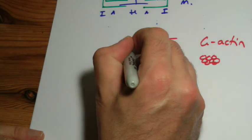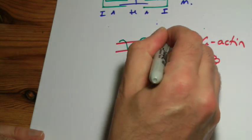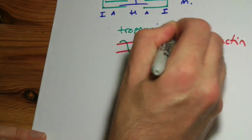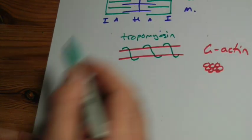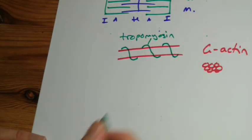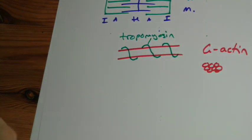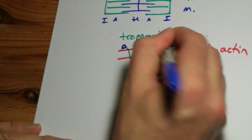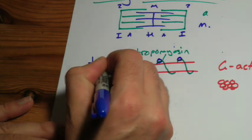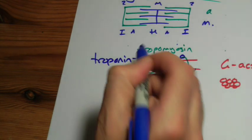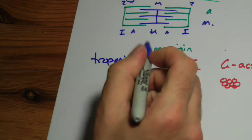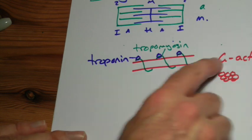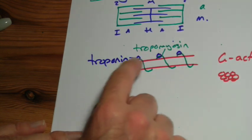And wrapped around that, just to confuse matters immensely, is something called tropomyosin. Why is it confusing? Well, we've already got myosin but we've got something now called tropomyosin which is wound around the outside. And attached to the tropomyosin is a molecule called troponin. So an actin filament is G-actin, tropomyosin wrapped around it and troponin.